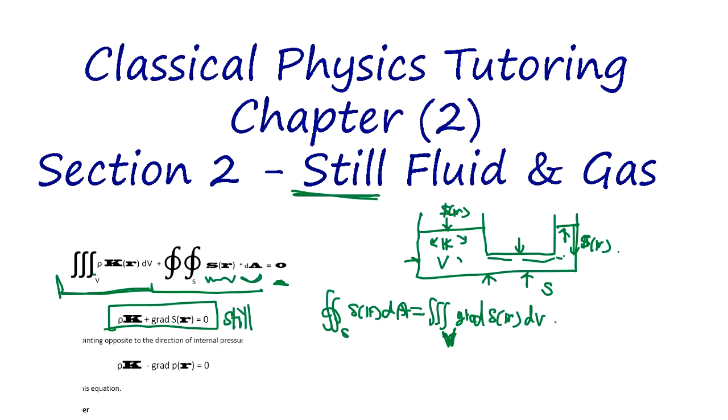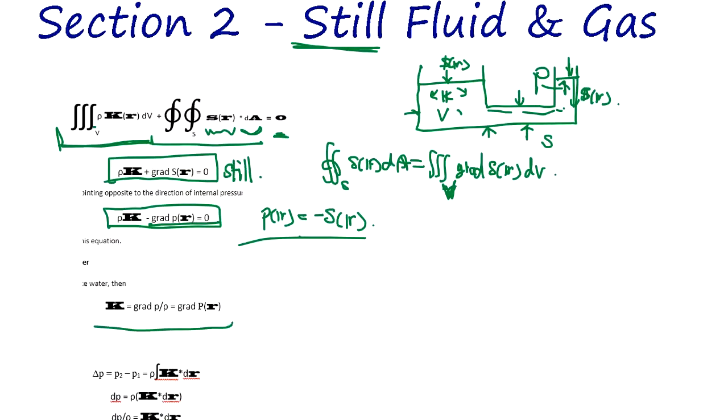And since we know the surface integral dA is going to be volume integral gradient S, we need to go back to vector calculus for review. So if we change this, then this becomes volume integral. We combine them together, this is the condition to be still, not moving. All the forces around this liquid is balancing.